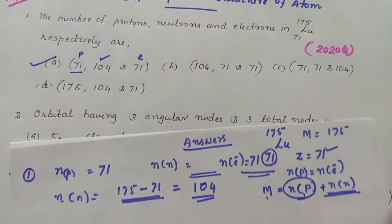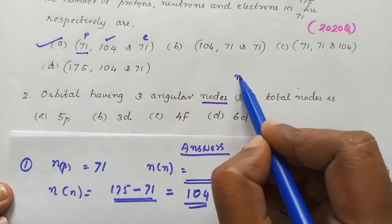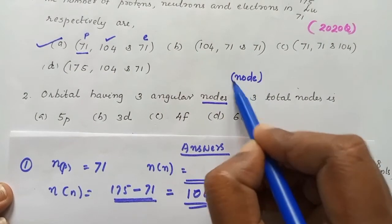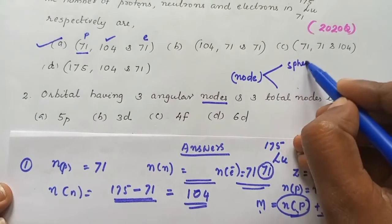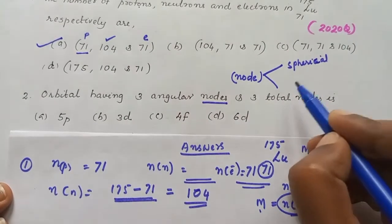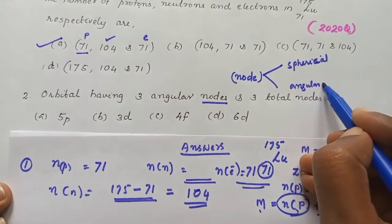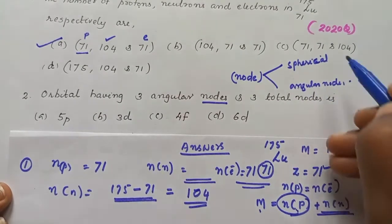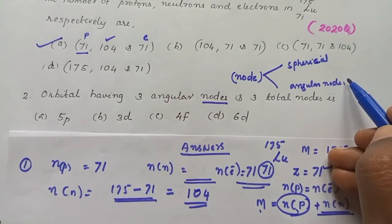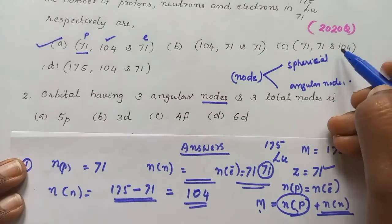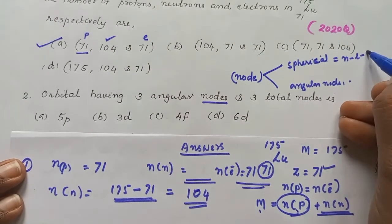Then second question. The second question is related to nodes, a very important topic in plus 1 chemistry. There are two types of nodes: spherical nodes and angular nodes. Spherical nodes can be calculated using the equation n minus l minus 1.